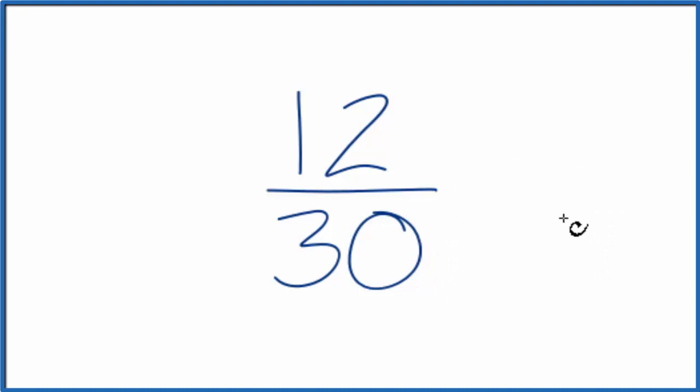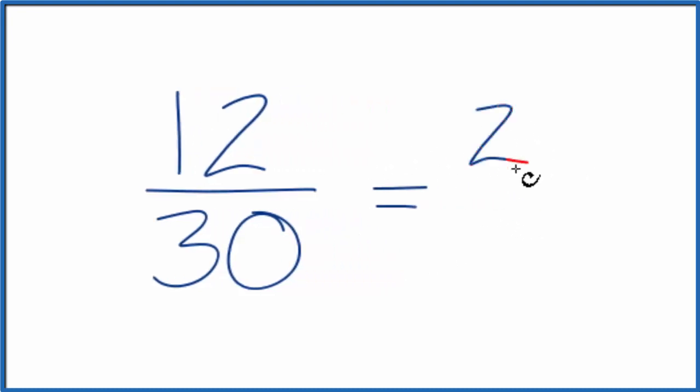So there's two ways to do it. First, if you know that 6 goes into 12 and 30, you could just divide 12 by 6. That gives you 2. And if you divide 30 by 6, you end up with 5. Because 5 times 6, that gives you 30.